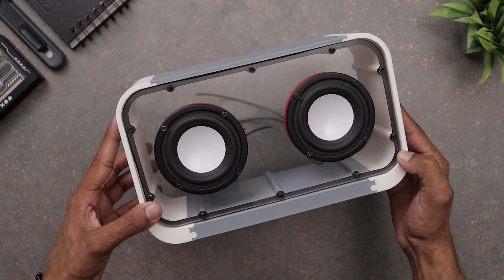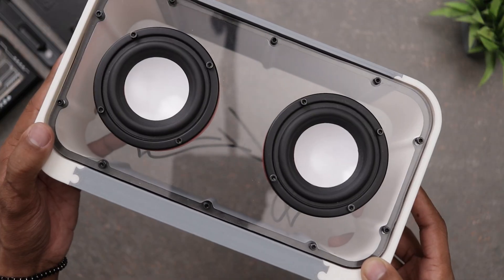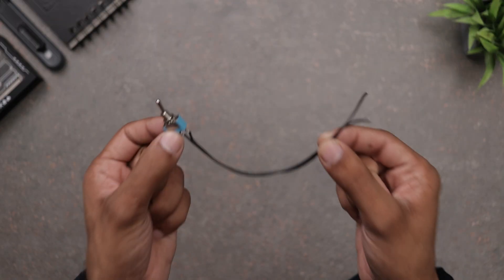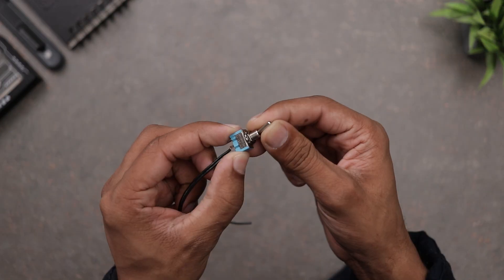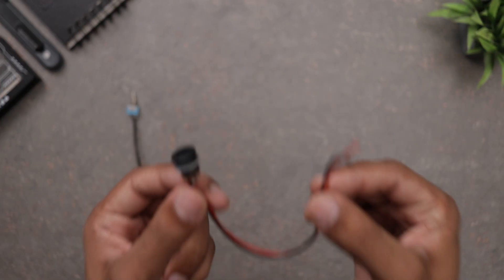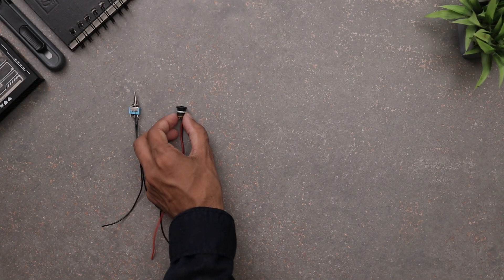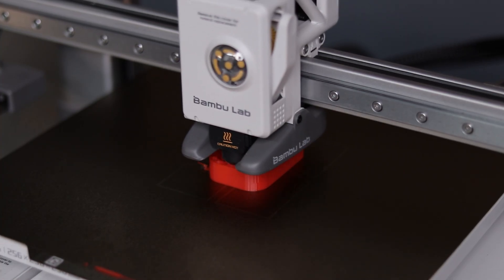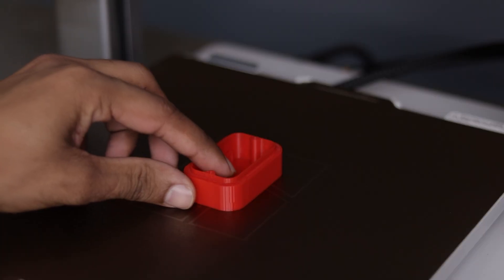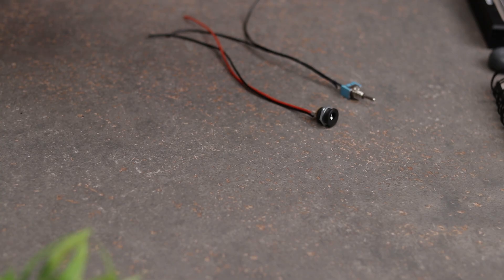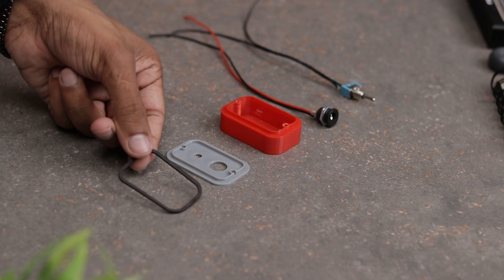Alright guys, the front side is done and it's already looking pretty awesome. Now, it's time to work on the back panel. First we need a switch. I am using this sleek double switch. Next we need an input socket for charging and power. To house everything perfectly, I 3D printed a custom enclosure. Now that we have all the parts ready, let's start with the assembly.